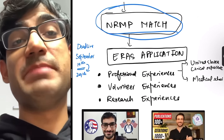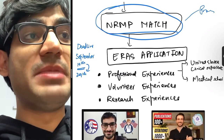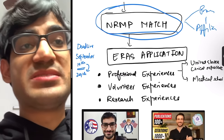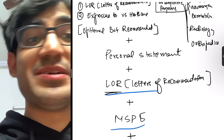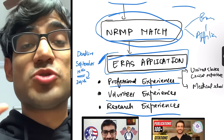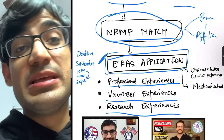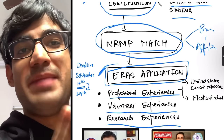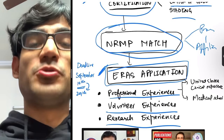Once ECFMG certified, the NRMP match begins. You submit an ERAS application — essentially a comprehensive CV containing your professional experiences, volunteer experiences, research experiences, personal statement, LORs, MSPE, and medical transcripts. Programs review your ERAS application and if they like your scores and profile, they send you an interview invitation. This is the core of the NRMP match process.